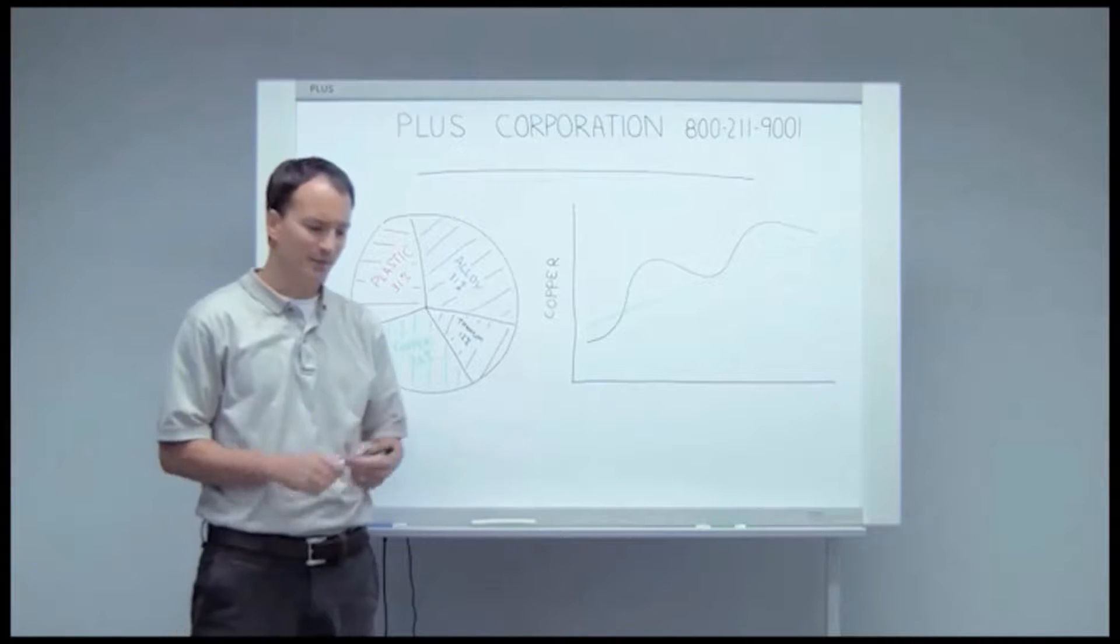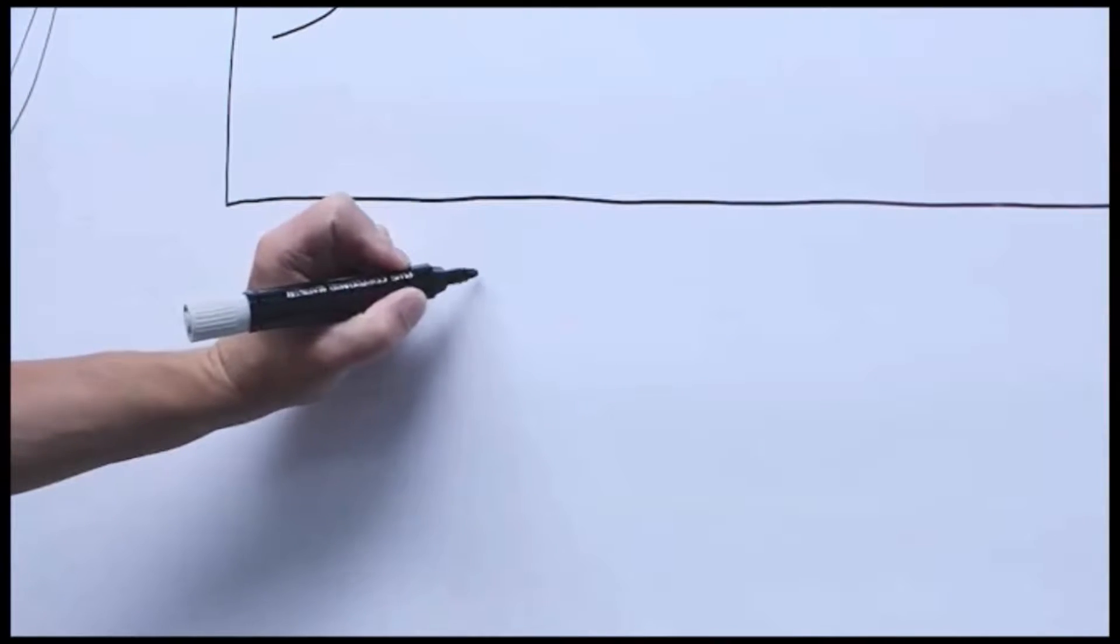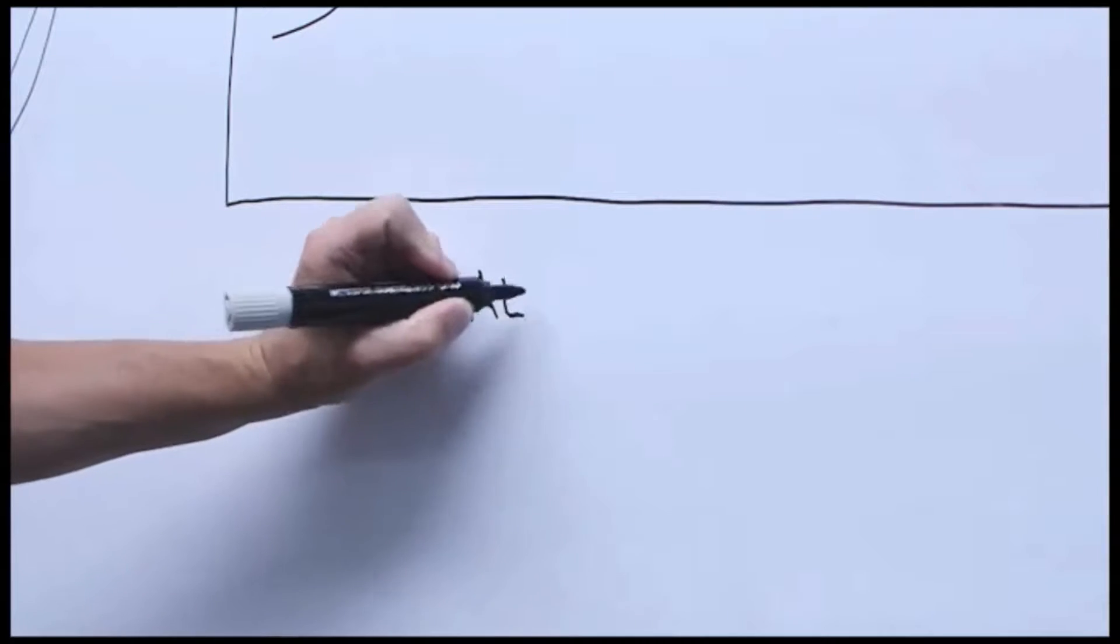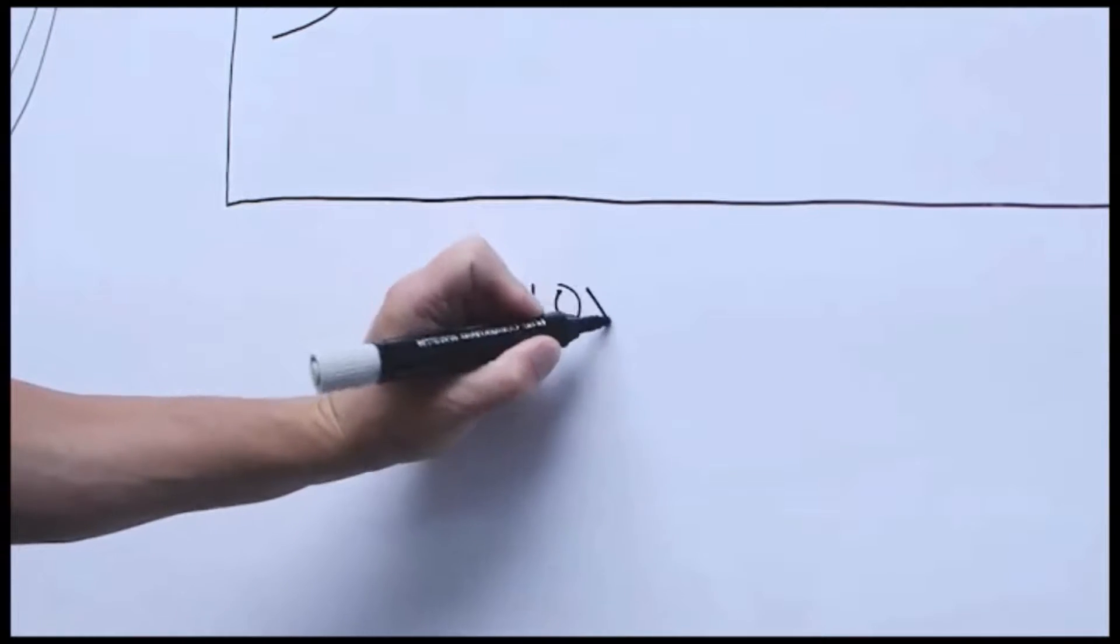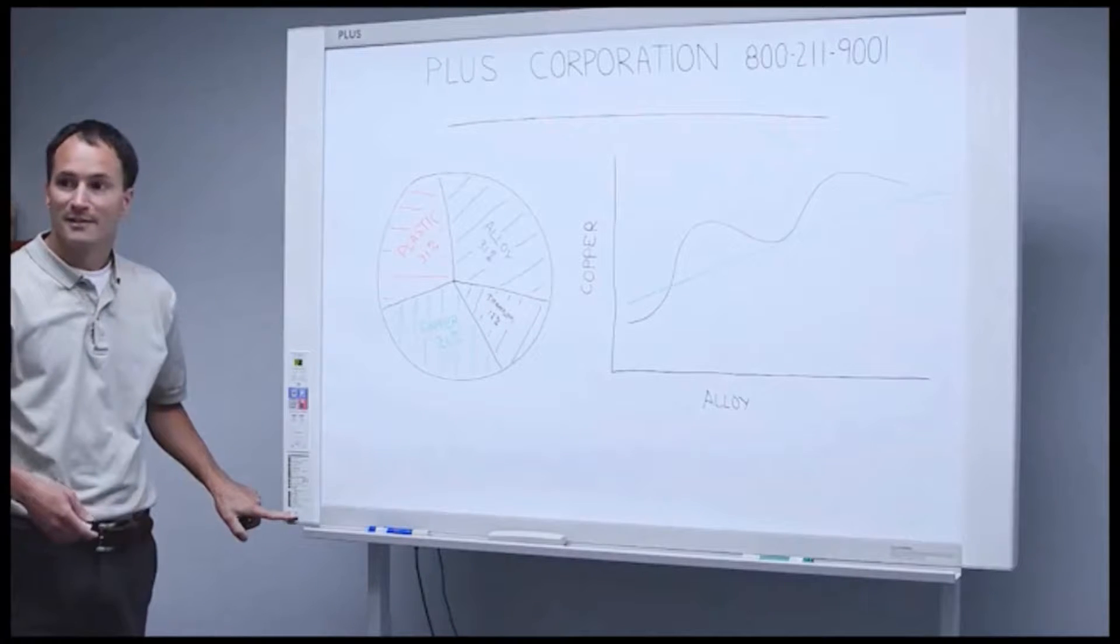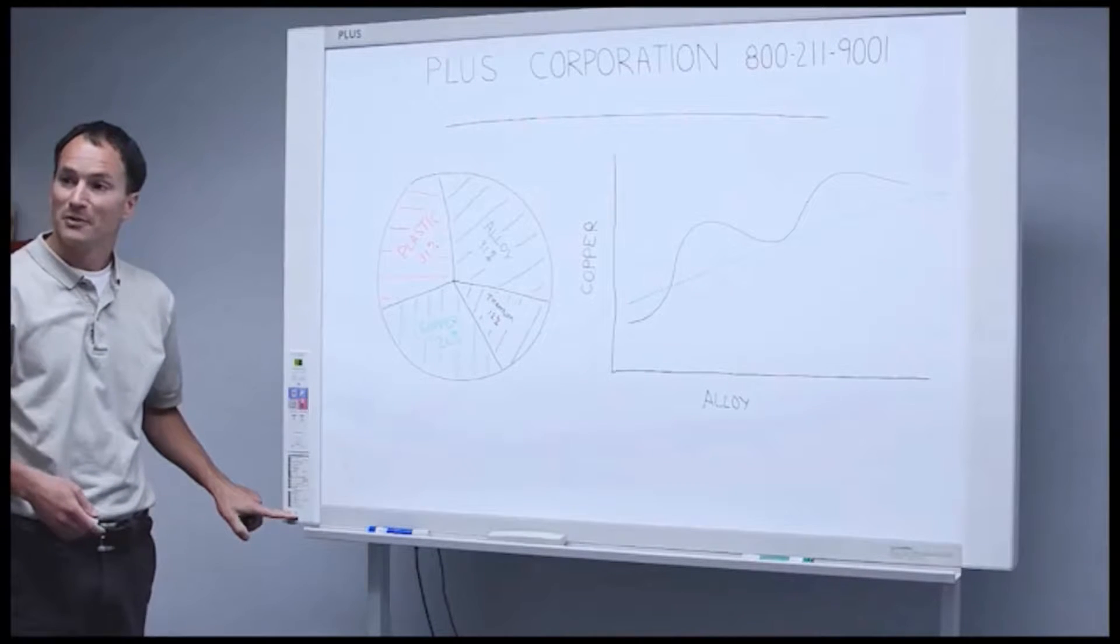So how do they work? Well, using regular whiteboard markers, you simply write on the board like you normally would, and then it gives you a few options. You can insert a USB memory stick and easily save your information to a USB memory stick.